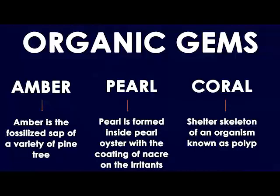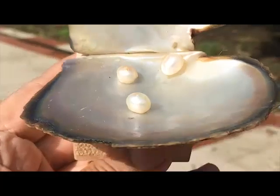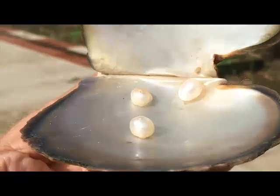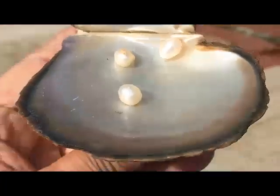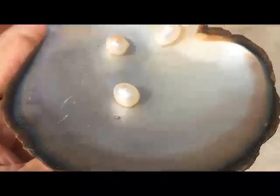Coral is actually the skeleton of the polyps. Amber is the fossilized sap of pine trees. These are the formations of these organisms. This is a pearl oyster in which the pearls are being formed.